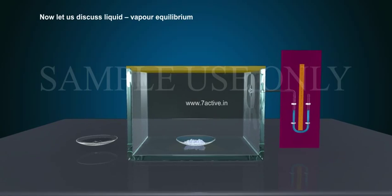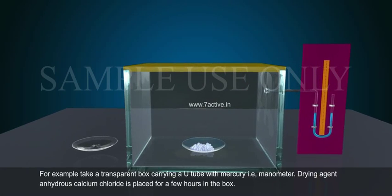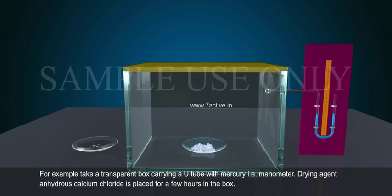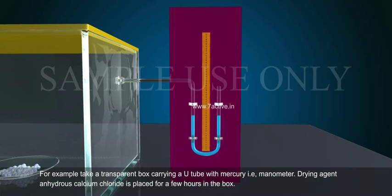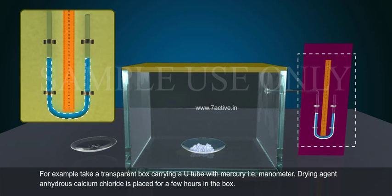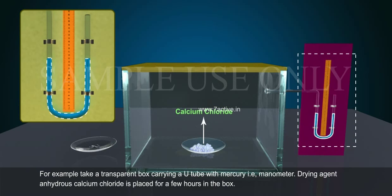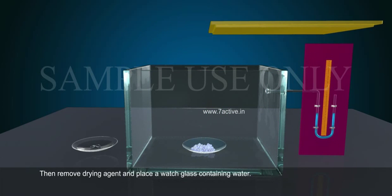Now, let us discuss liquid vapour equilibrium. For example, take a transparent box carrying a U-tube with mercury, that is, a manometer. Drying agent, anhydrous calcium chloride, is placed for a few hours in the box. Then remove the drying agent and place a watch glass containing water.